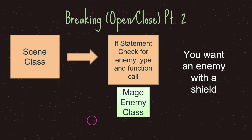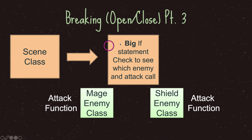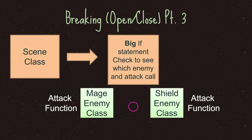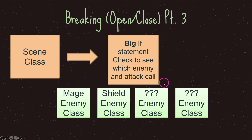As a beginner, we tend to just let our code grow. We still have our scene class but now we have a big if statement to check which enemy we are and call its attack. The mage enemy class has an attack function and the shield enemy class has another attack function, but notice that none of these are related to each other nor are they inheriting from anything. As we add more items our big if statement keeps growing, and we need a way to stop that — that's where the open and close principle comes into play.